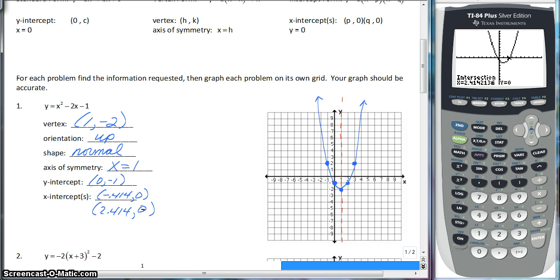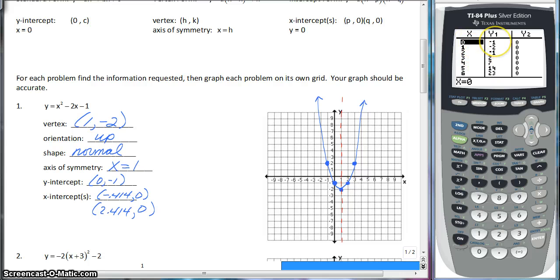Now to find your other one, you have to press 2nd, trace, intersect again. But now you have to take your little blinky guy all the way over to the right side. The right intersection. And you get pretty close over here, press enter three more times. And it is going to tell you that the other one is at 2.414 comma 0, and there you go. So that is how you find your x intercepts with the calculator. You could find the y intercept with the calculator. To do that, all you have to do is look for when x is equal to 0. That is how you find your y intercept. So you would just press 2nd, graph, go to where x equals 0, and you know that it is minus 1. That will work in all three forms. So that is it. That is how you use your calculator to accurately graph a parabola. So it is your turn.